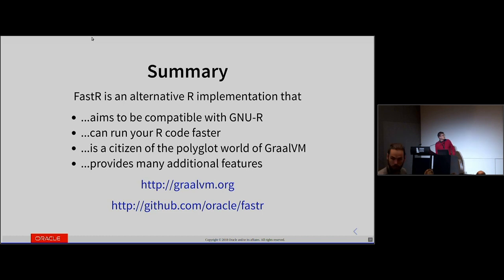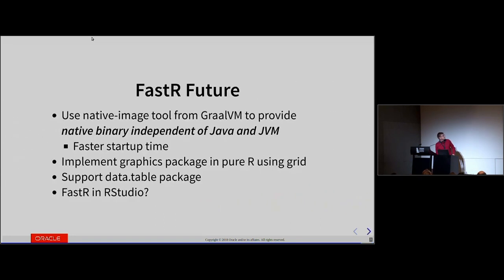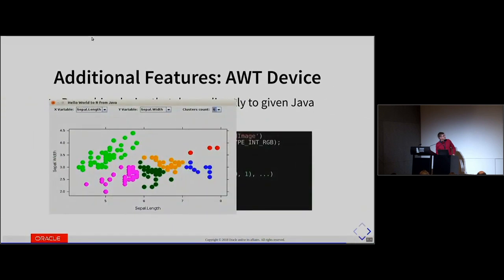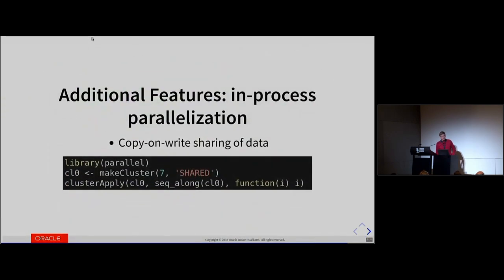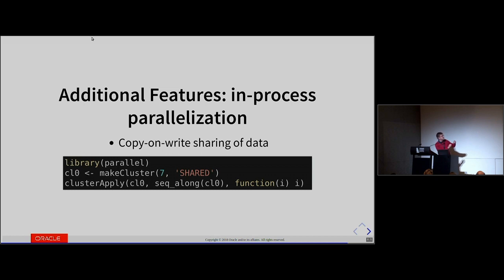Q&A: The question was whether FastR supports parallel computing. We support the parallel package. We also have our own cluster type called 'shared', which doesn't start a new process but starts a new Java thread. With other cluster types, data is normally serialized and sent to the new process. But with this cluster, you just share the data through memory — it's not copied, it's shared with copy-on-write semantics.